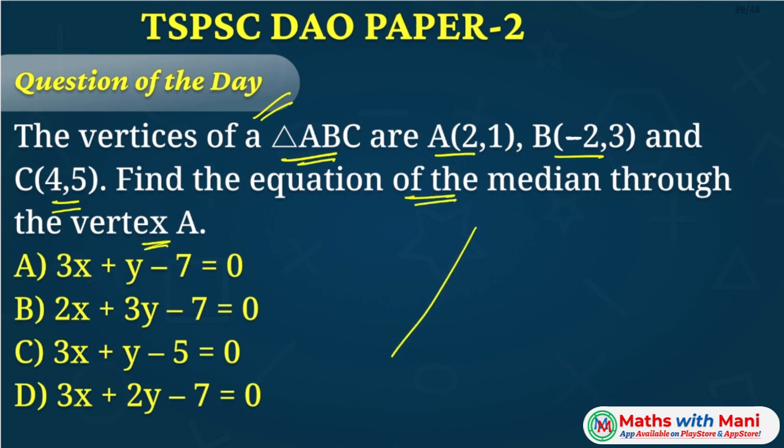So it is a very simple question. There is a triangle in which A is given, B is given, C is given. The median is nothing but a line joining the midpoint of the opposite side to the given vertex. So you can find out the midpoint of BC.